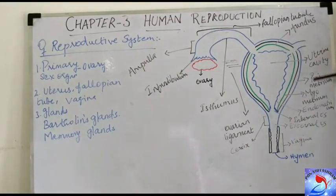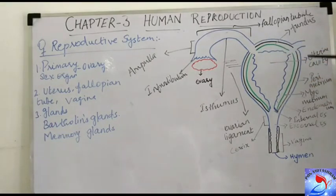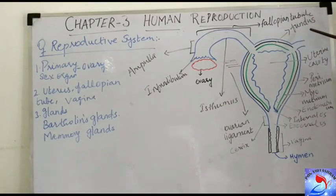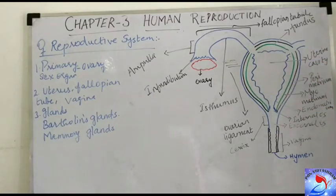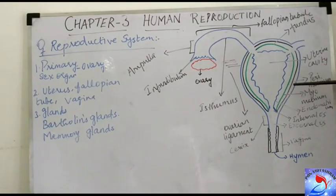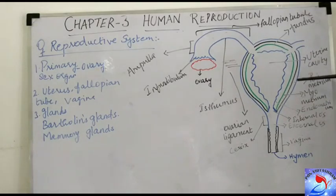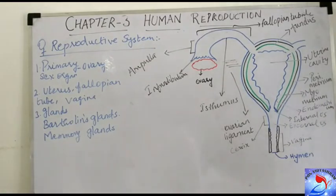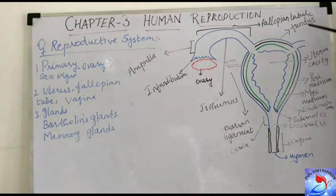The fallopian tube opens into a muscular structure called the uterus. The top of the uterus is called the fundus, and it forms the uterine body. The uterus consists of three layers: perimetrium, myometrium, and endometrium. The perimetrium is the outer layer, and the myometrium is the muscular middle layer. The myometrium, being made of smooth muscle, helps in contractions during the labor process when the developed embryo is expelled.